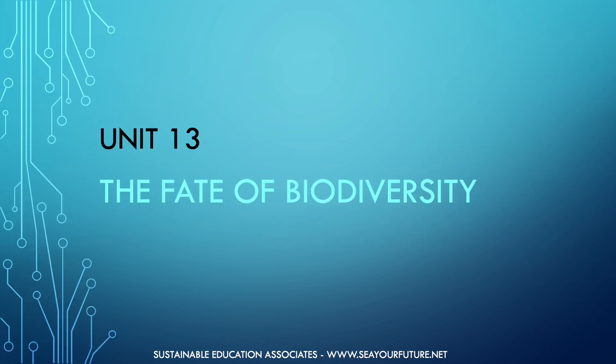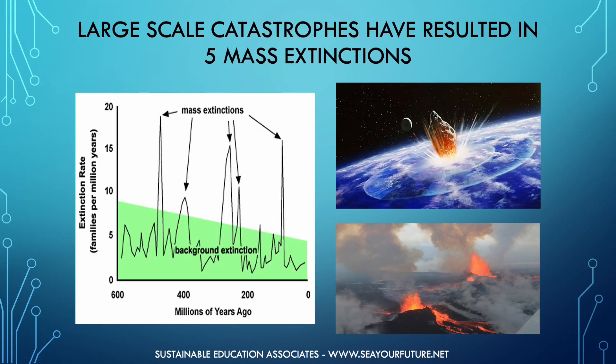Unit 13: the fate of biodiversity. As mentioned in an earlier unit, there is a natural level of extinction referred to as the background extinction rate that will occur with or without human interference. There have also been five mass extinctions, defined as the extinction of many species in a relatively short period of geologic time. These naturally occurring mass extinctions have been caused by global changes in environmental conditions, with large-scale catastrophes such as volcanic eruptions and collisions with asteroids thought to have brought about such changes.